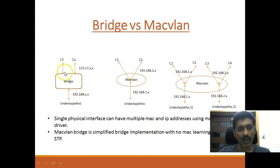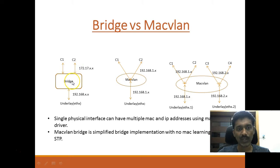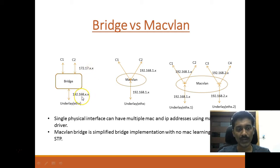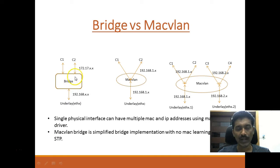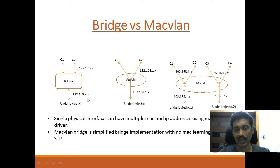Typically, in a bridge driver, which is the default Docker networking driver, we have containers that connect to the bridge, which is in Docker's default subnet. And then we have the underlay of the physical network, which will normally be in a different subnet. The bridge takes care of doing NAT from the container's IP address to the underlay network. One of the problems with the bridge driver is that the container's subnet is different from the underlay physical subnet.